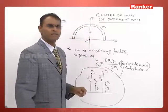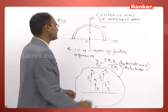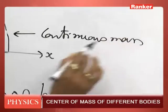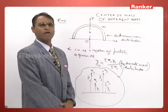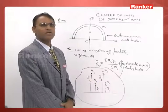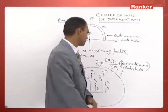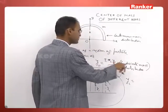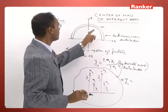But here the ring is not a discrete mass distribution — the ring is a continuous mass distribution. You cannot distinguish one particle of the ring from another; they are continuously arranged. Therefore, this ring is a continuous mass distribution and for this we need to develop a formula. A little modification of the center of mass formula for discrete mass distribution gives us the formula for continuous mass distribution.